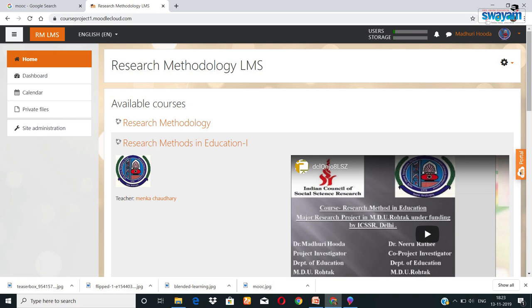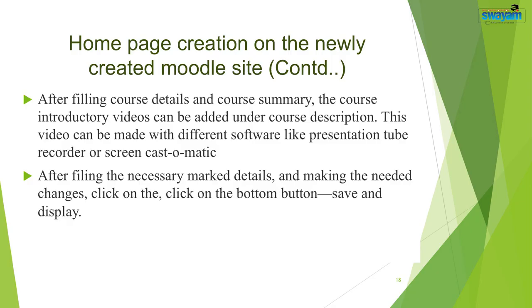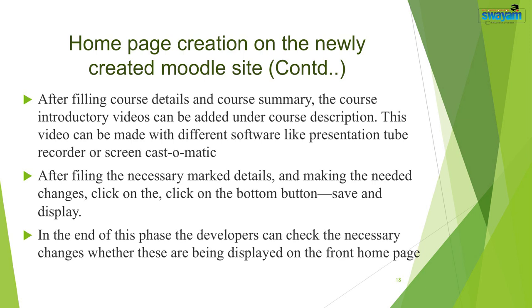The developed video is played and after playing, right-click the mouse. Options will appear like copy video URL, copy embed code, or other options. The developer can upload the video file directly or use the URL from YouTube. This course introductory video should be pasted preferably as embedded code so that it will appear directly on the home page. After filling all necessary details and making needed changes, click on 'Save and display' and check whether the changes are displayed on the front home page.